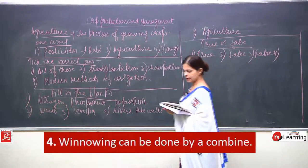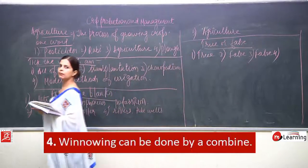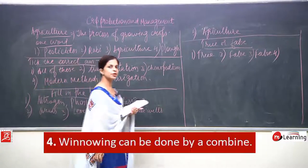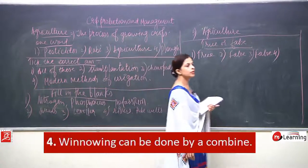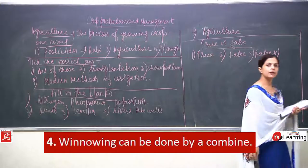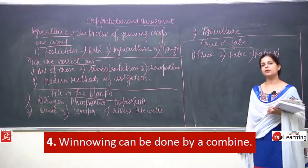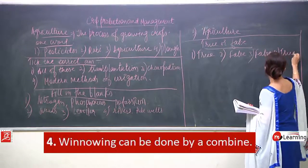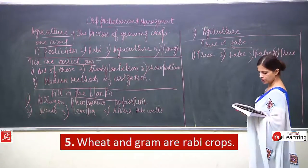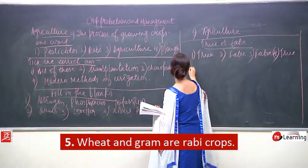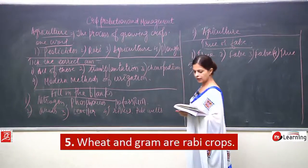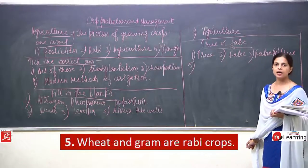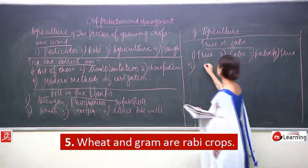D: winnowing can be done by a combine — true. A combine is a machine that does three things together: it harvests, threshes, and winnows. E: wheat and gram are Rabi crops — absolutely true.